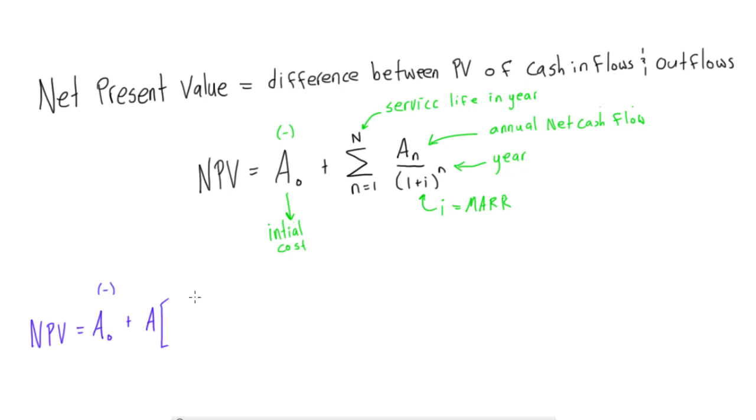Again, this is for a special case only. So then we would have 1 minus 1 plus i to the power of negative n all over i. Again, we're still using this minimum acceptable rate of return for our i.